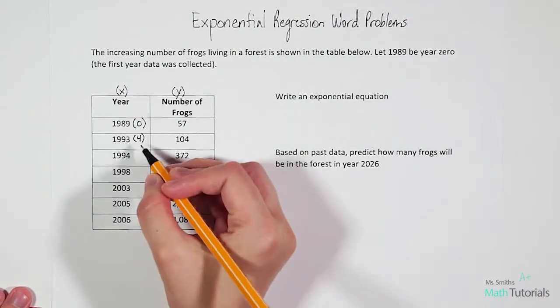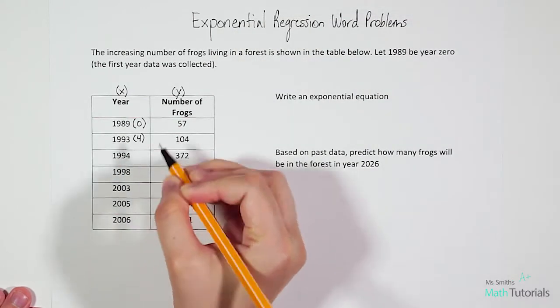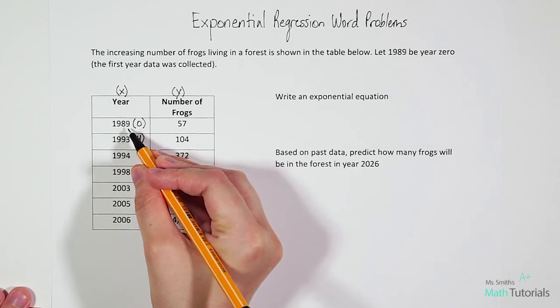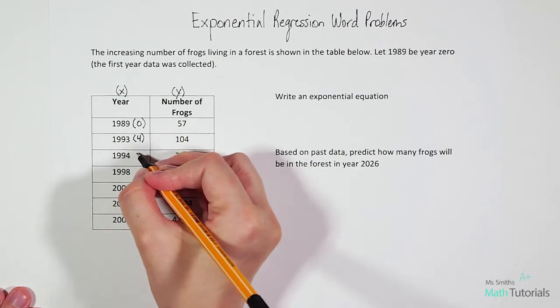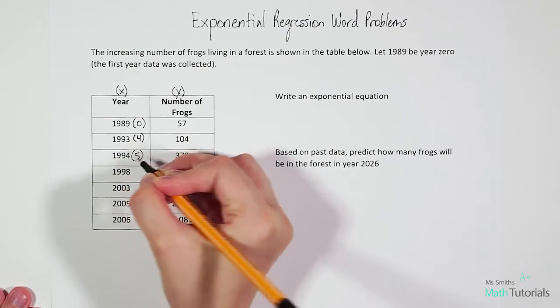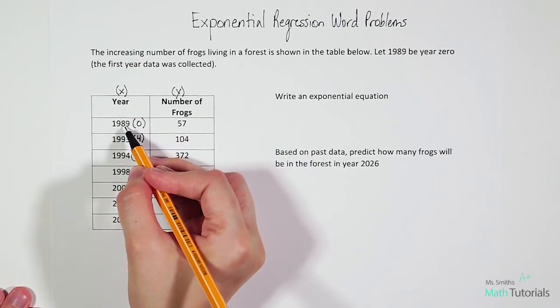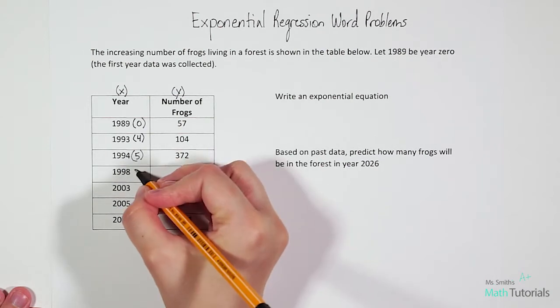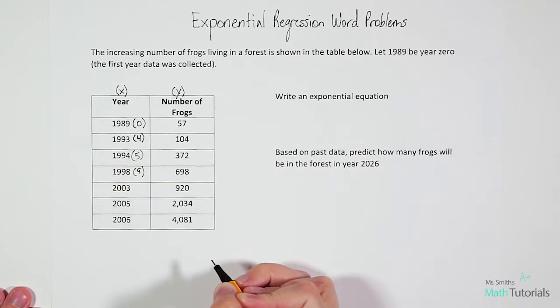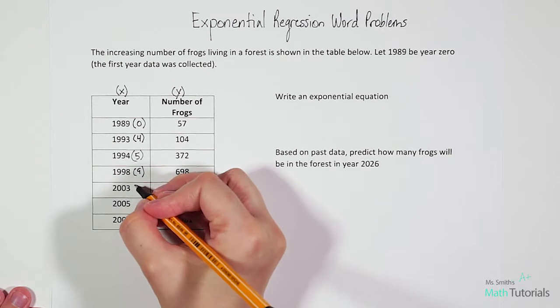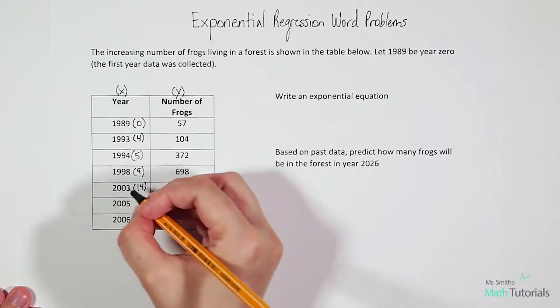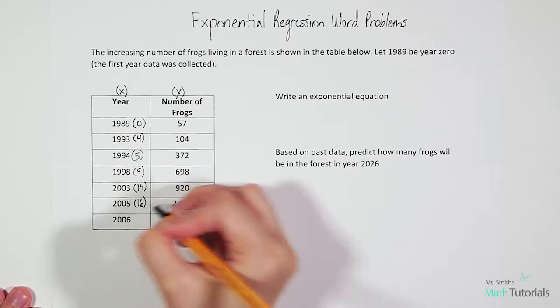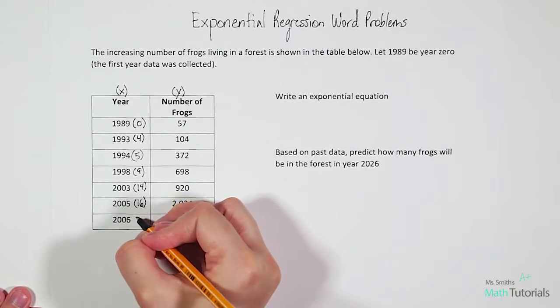We can do that same process for each of these years. To speed up our time though, I'm going to go ahead and let you know what each of these values are. If 1989 was our starting year, then 1994 would be year five, 1998 would be year nine, 2003 would be year 14, 2005 would be year 16, and 2006 would be year 17.